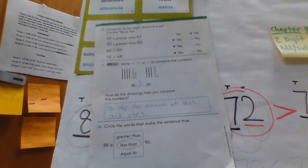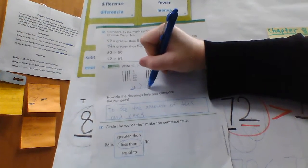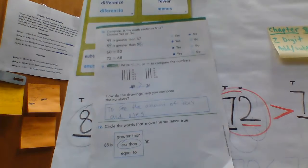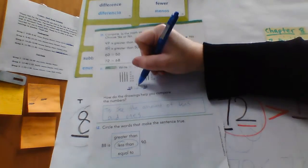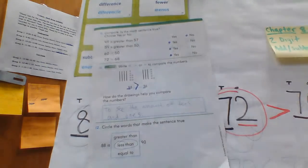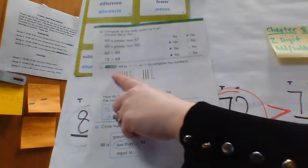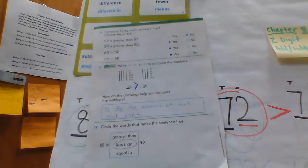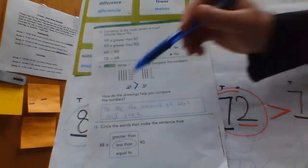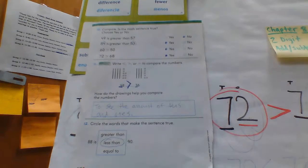Number eleven: write the symbol to compare the numbers. Look at the tens place — I have four tens and three tens, and four tens is greater than three tens, so the symbol opens toward 48. 48 is greater than 36. The drawings help you see the tens and ones, which helps you determine which is greater or less. They ask: how do the drawings help you compare? I answered: to see the amount of tens and ones.